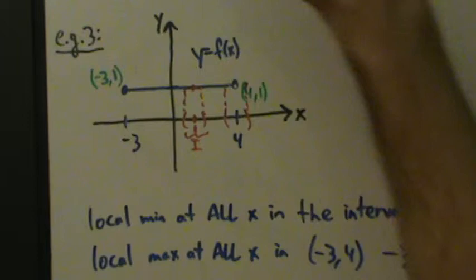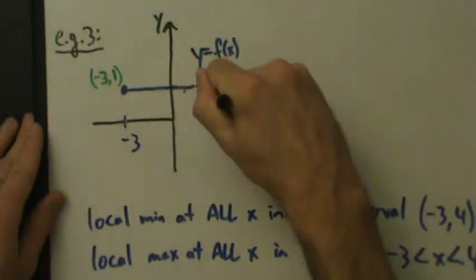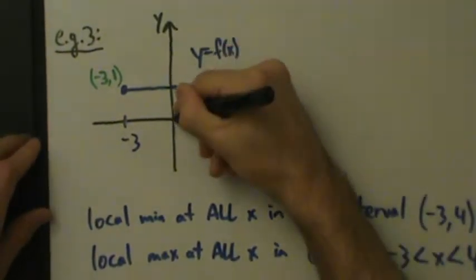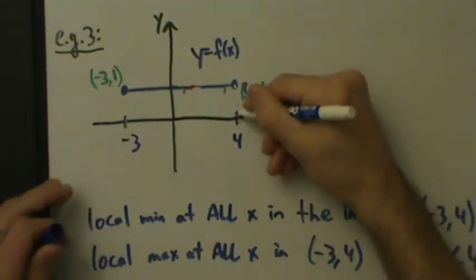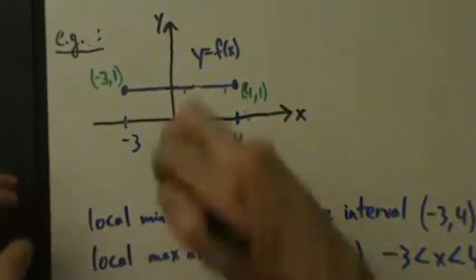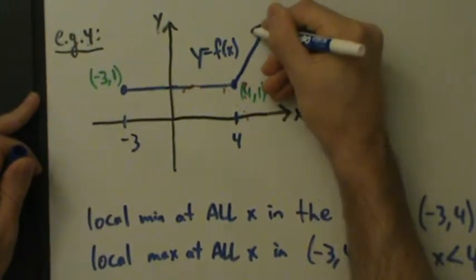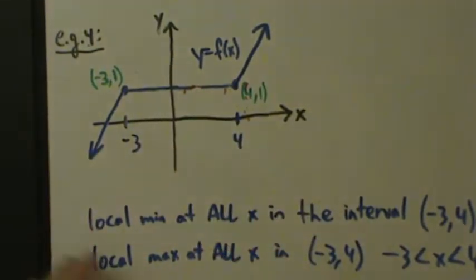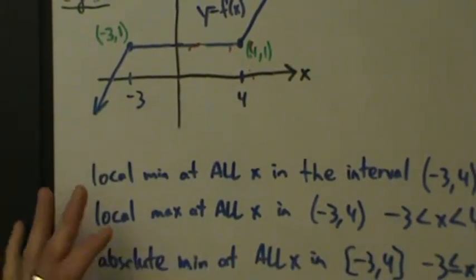Now let's see example 4, which is pretty similar to example 3 with only a small difference that changes things more than you might expect. We have the same horizontal segment, but now we add a new piece going infinitely far up to the left and another piece going infinitely far down to the right. Now let's talk about global extrema first because that's easier. Globally speaking, there's no absolute min and no absolute max anymore.